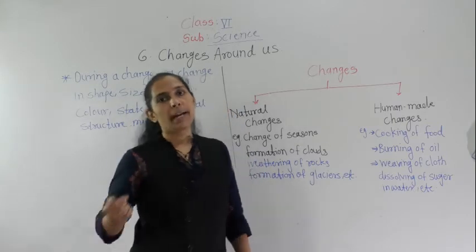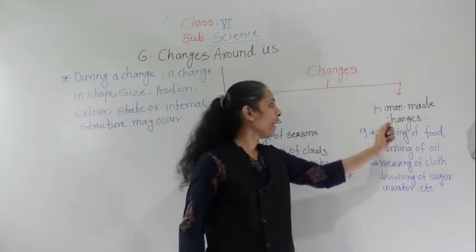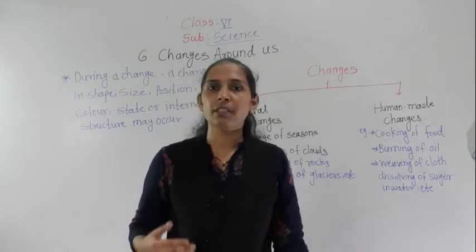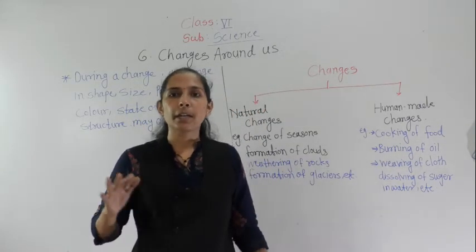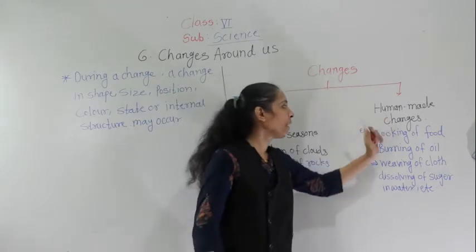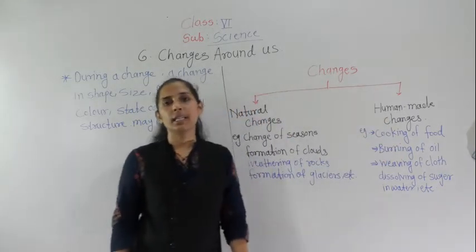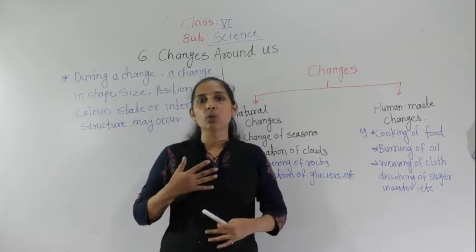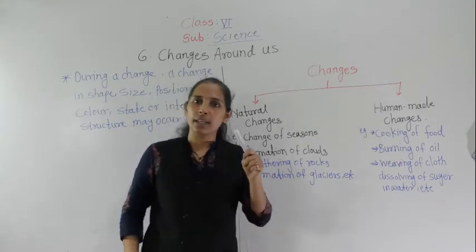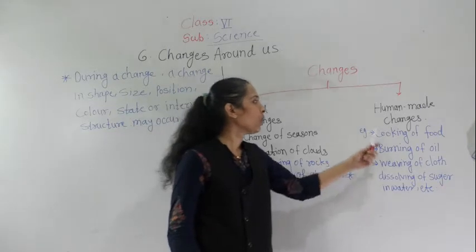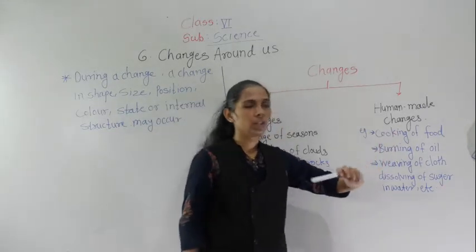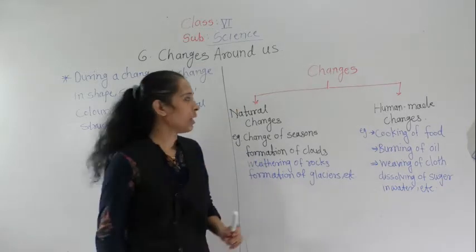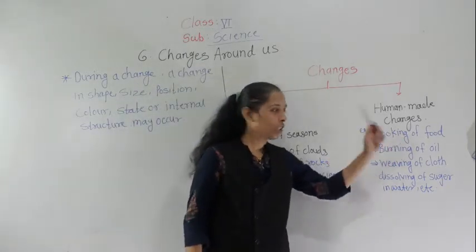Opposite to natural changes, we have human-made changes. Some changes occur due to the efforts of human beings — these are called human-made changes. The changes that happen due to the activity of the human being, where human involvement is there, are called human-made changes. The changes which occur due to the work and efforts of human beings are called human-made changes.